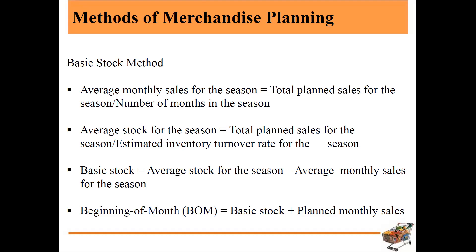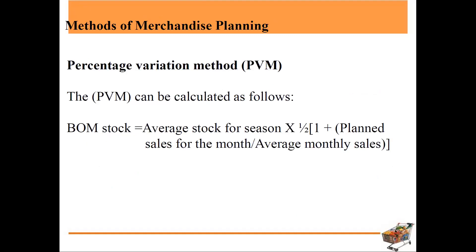Average stock for the season equals total planned sales for the season divided by the number of months in the season. Then average stock for the season also equals total planned sales for the season divided by the estimated inventory turnover rate for the season. Basic stock equals average stock for the season minus average monthly sales for the season. Beginning of Month (BOM) equals basic stock plus planned monthly sales.